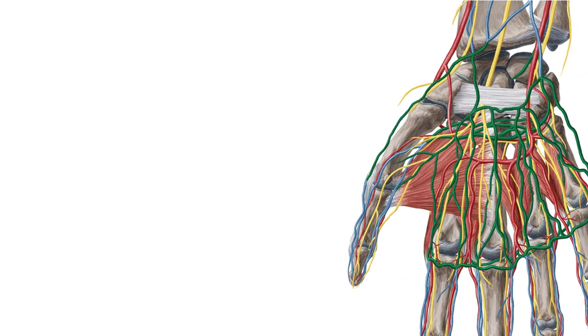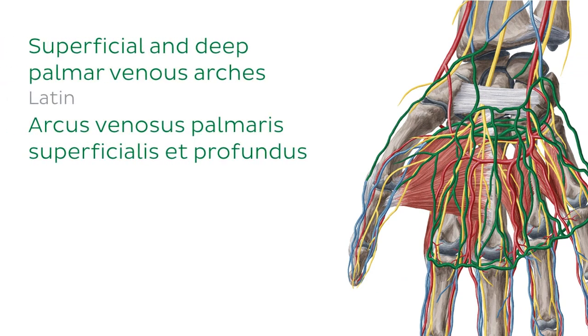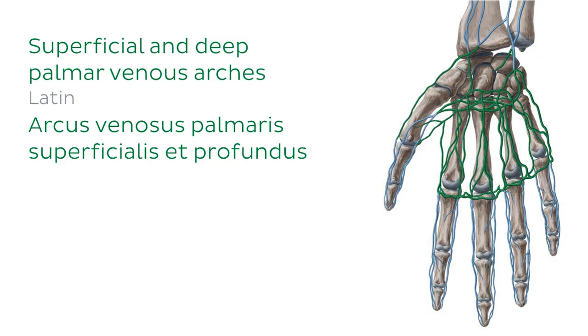We'll start our journey in the hand and look at the superficial and deep veins that drain the tissues here. When looking at the palmar view of the hand, we can see both the superficial and deep palmar venous arches highlighted in green, closely associated with the palmar arterial arches of the hand. If we remove the arterial and muscular structures, this will help us see the veins a little better. The venous network appears complex and its arrangement does tend to vary between individuals, so take the positions indicated here as a guide rather than a solid rule.